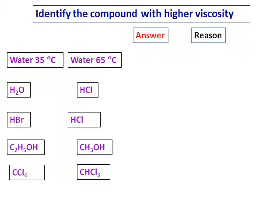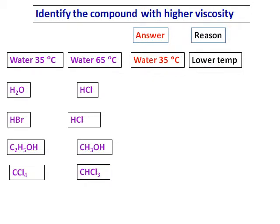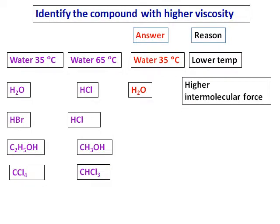Identify the compound with higher viscosity. Water at 35 degrees Celsius and water at 65 degrees Celsius. Obviously, water at 35 degrees Celsius will have a higher viscosity because viscosity is higher at lower temperature. Then water and HCl. Water will have a higher viscosity because of higher intermolecular forces. HBr and HCl. HBr will have a higher viscosity because it is heavier.